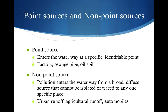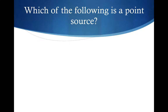A non-point source is when pollution enters the waterway from a broad, diffuse source that cannot be isolated or traced to any one specific place. An example is urban runoff — runoff that comes from an entire urban area, a neighborhood, a small city, or everywhere in a watershed — and it can't be traced to a single house or person. Agricultural runoff is similar because agriculture takes place over a broad area, making it difficult to pinpoint which particular farm or farmer is responsible. Automobiles are also considered non-point sources collectively, because they move around and together generate a lot of pollution.